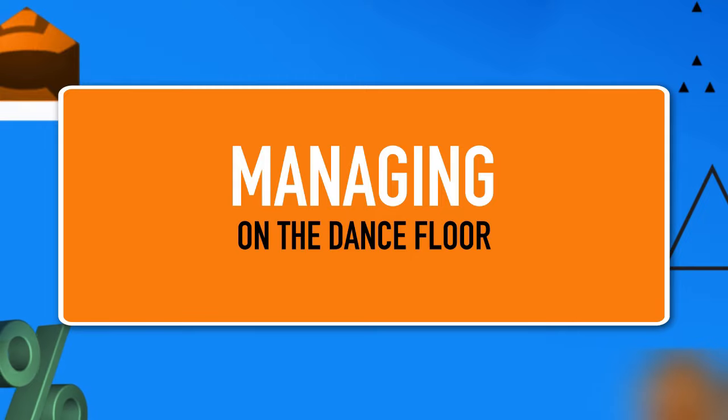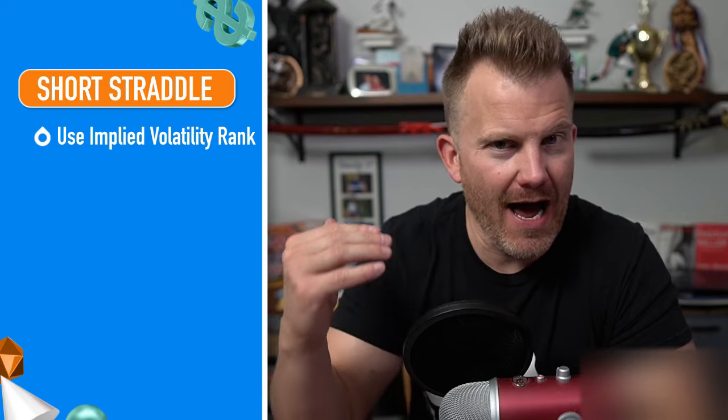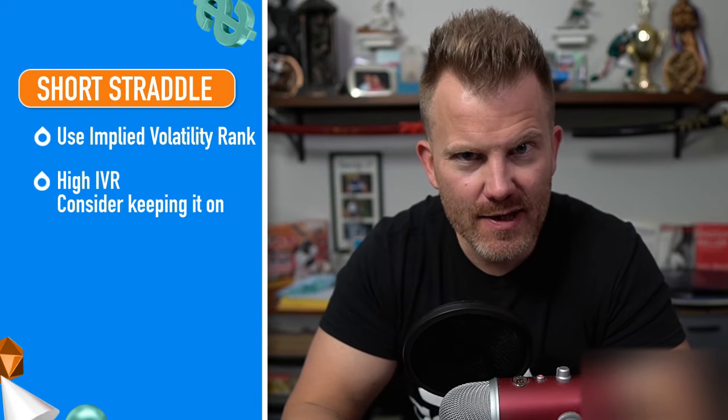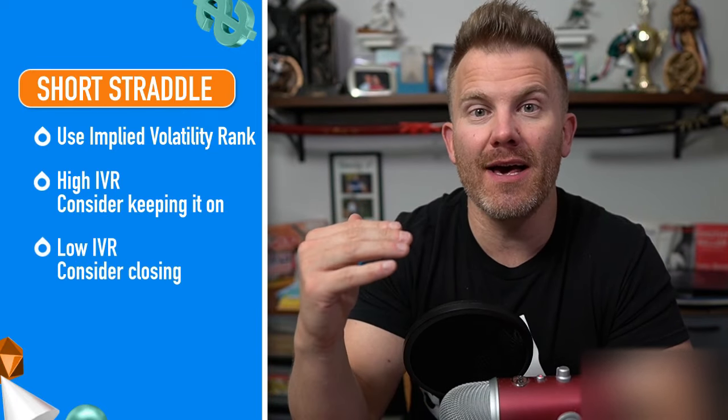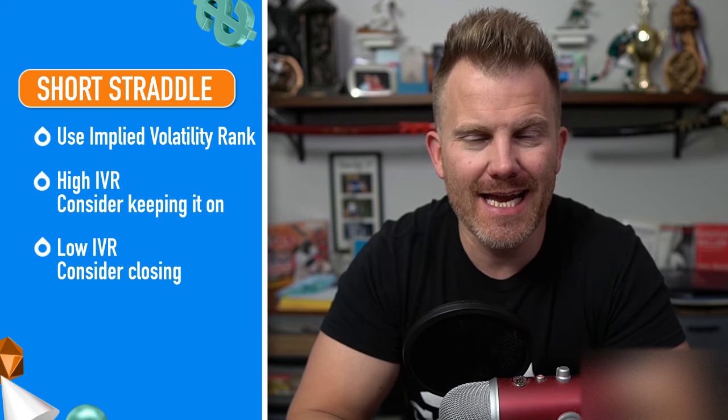So those are the winners and those are the losers. But what about everything in between — that dance floor? Well, this one's pretty simple because it's the exact same as what we've seen so far. Look at IVR. If IVR is still elevated, then consider keeping it on. If IVR has collapsed, then consider taking it off. The short straddle is now in the books. Be sure to save this video for future reference, and when you are ready, I will see you in the next and final video — the Ratio Spread.